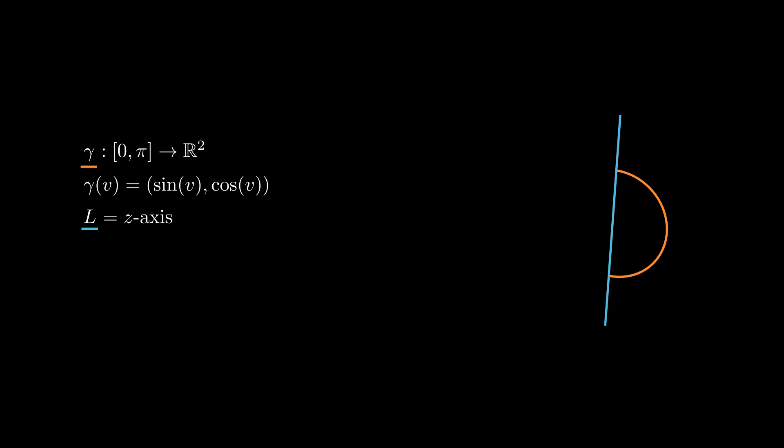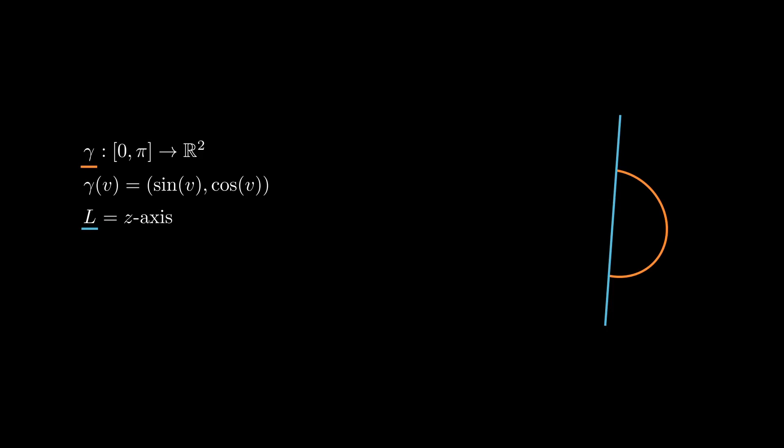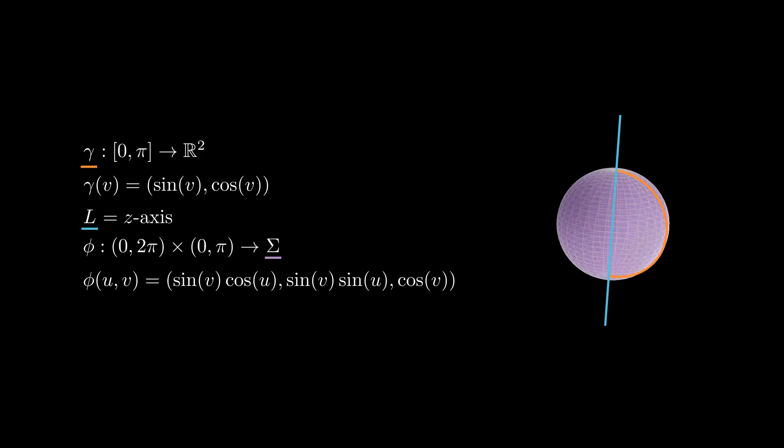A concrete example of this construction is the following. If gamma is the curve given by sin(v), cos(v), with v going from -π/2 to π/2, then the surface of revolution of gamma is the unit sphere.